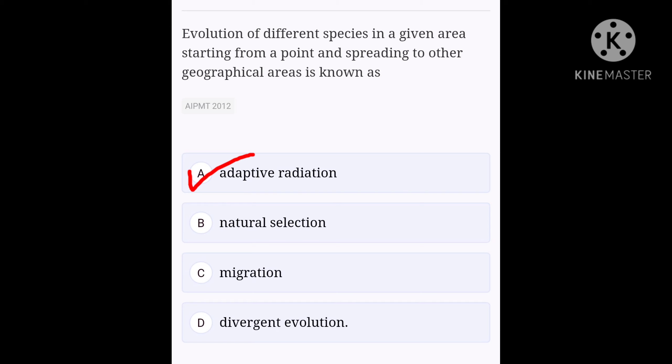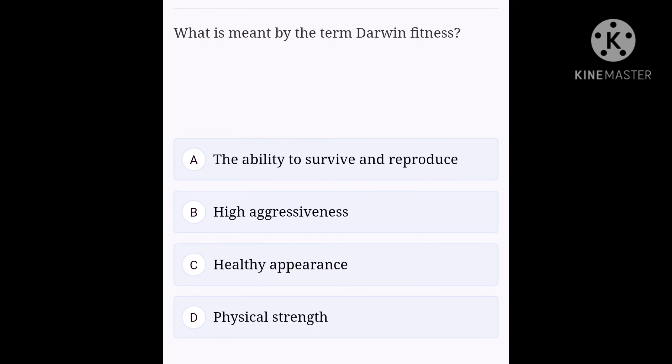Next question. What is meant by the term Darwinian fitness? Option A: the ability to survive and reproduce, option B: high aggressiveness, option C: healthy appearance, option D: physical strength. Easy and important one, and the right option is A, the ability to survive and reproduce.